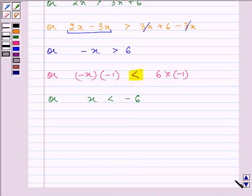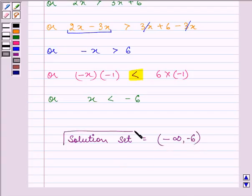So for real x, the solution set consists of all real numbers less than minus 6. So the answer will be minus infinity to minus 6 in an open interval. This completes the question that was given to us. Bye for now.